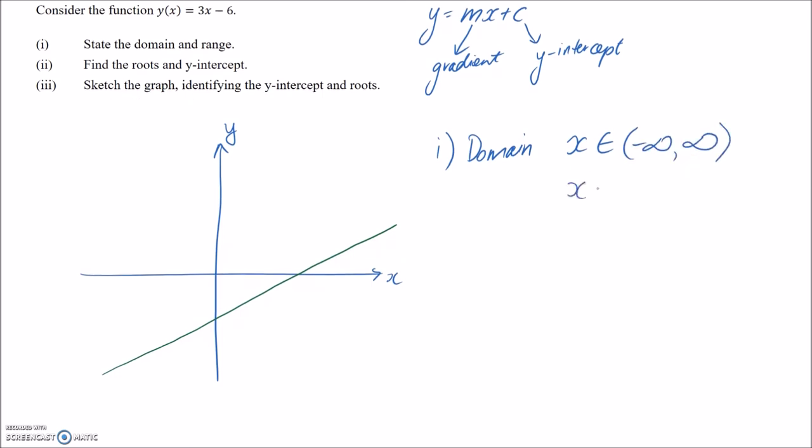Another way of writing this would be to say that x is a part of real numbers. Again, this just means exactly the same thing. It's all the numbers from negative infinity to positive infinity. Just watch out for the convention here. We use rounded brackets when we describe this domain. That's because we're not including the actual value negative infinity. We approach it, but we never actually reach it. So that's the convention there.